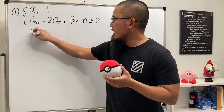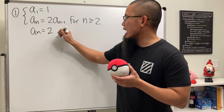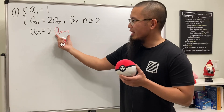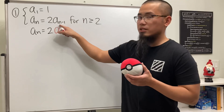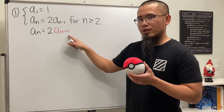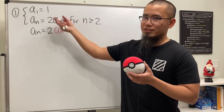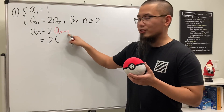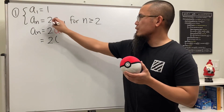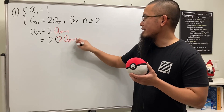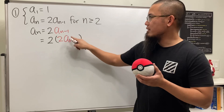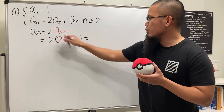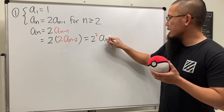Starting with aₙ, we know this is two times its previous term. But how can we figure out aₙ₋₁? The idea is that we can just keep using this rule. To figure out aₙ₋₁, we do two times its previous term. So we write two times aₙ₋₁, substitute in, and we get two times aₙ₋₂. Multiplying it out, we get 2² times aₙ₋₂.